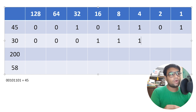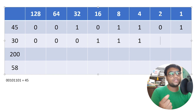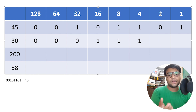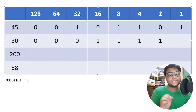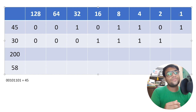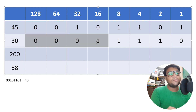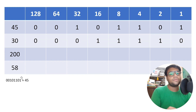Can we subtract 8 from 14? Yes — put a 1 below 8. The difference is 6. Can we subtract 4 from 6? Yes — put a 1 below 4, and we get a difference of 2. Can we subtract 2 from 2? Yes — put a 1 below 2, and 2 minus 2 is 0. Can we subtract 1 from 0? No — put a 0 below 1. So we have our binary equivalent of 30.